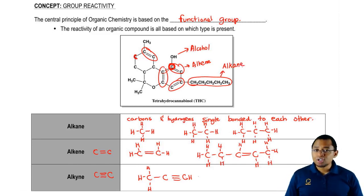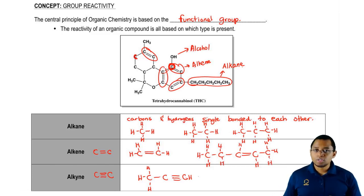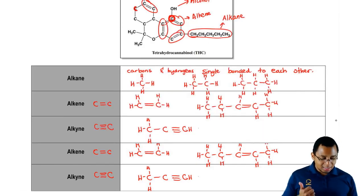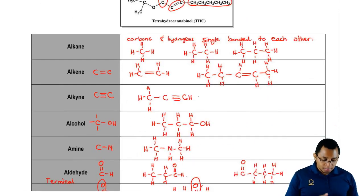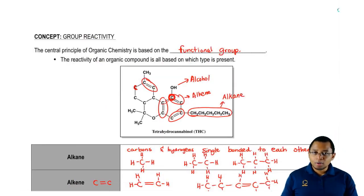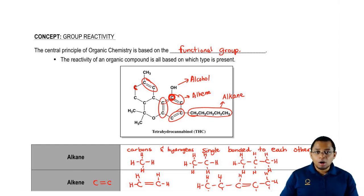Those are the major functional groups you should know — the ones stated in your book that you're responsible for. Just remember, functional groups are really about looking at the group and understanding the connections. Be on the lookout for these particular features: alkenes have double bonds, alkynes have triple bonds, alcohols are a carbon connected to an OH, and amines have a carbon connected to a nitrogen. If you can focus on those portions, it'll be easier to identify the functional groups present in large or small molecular compounds.